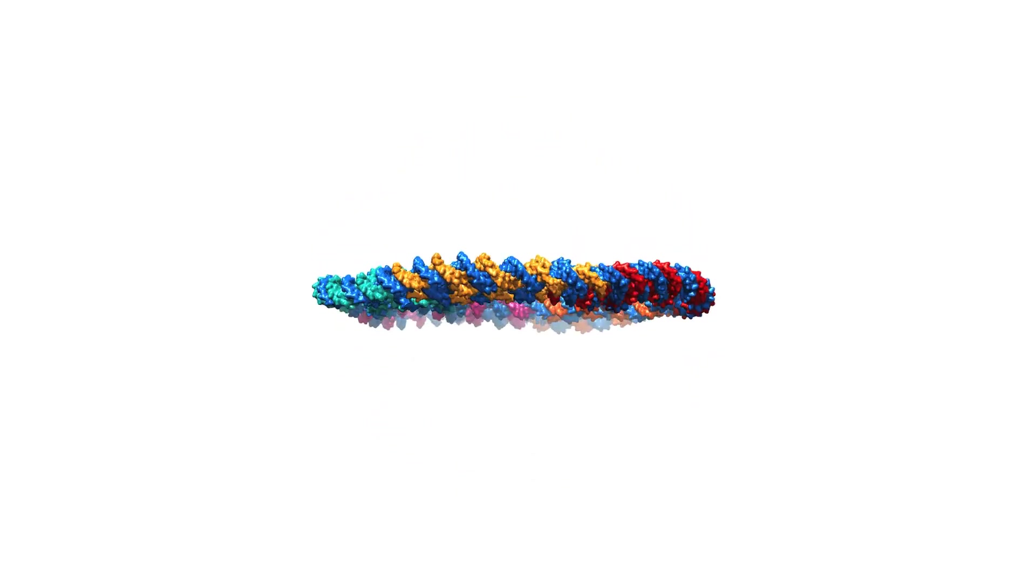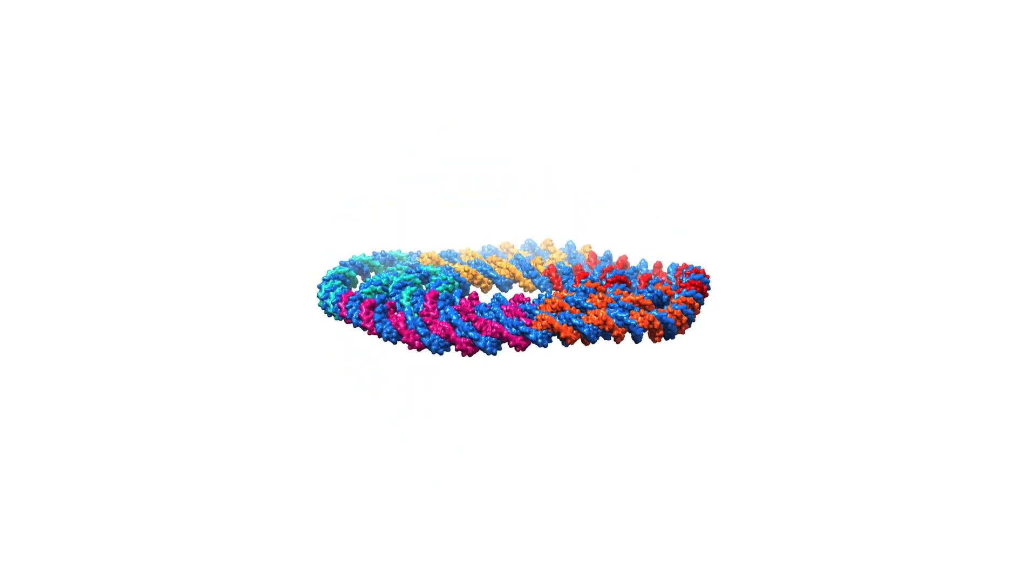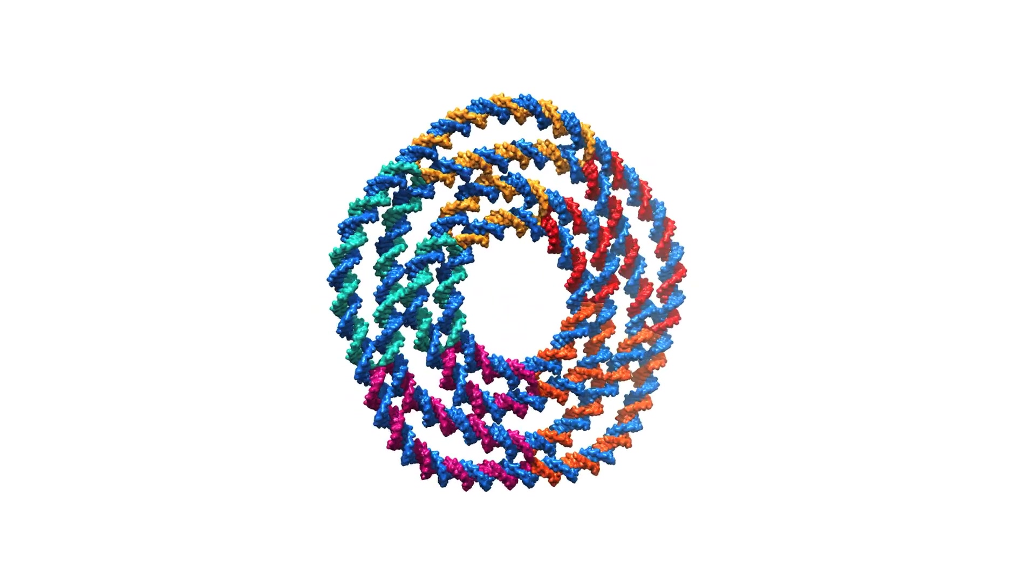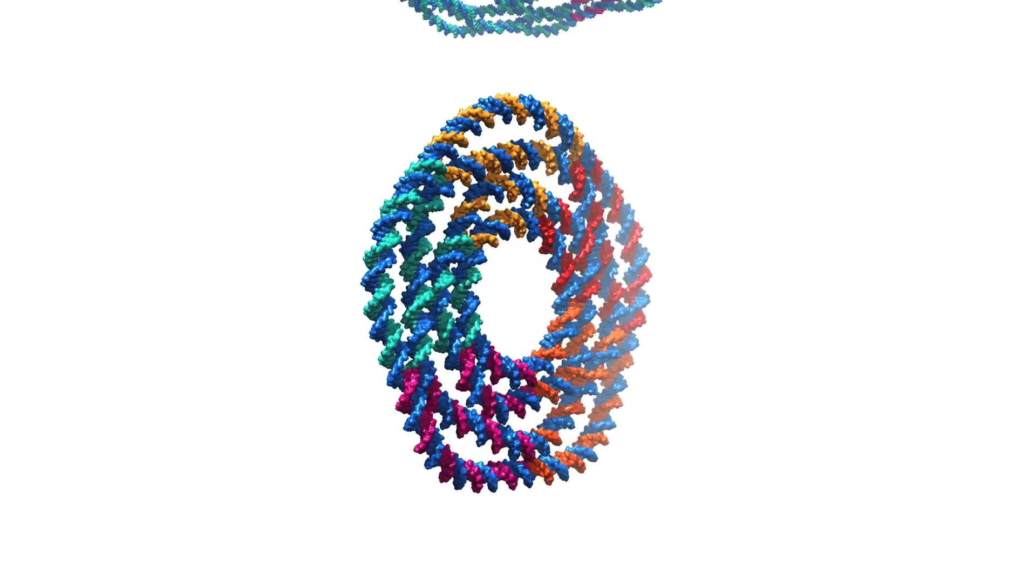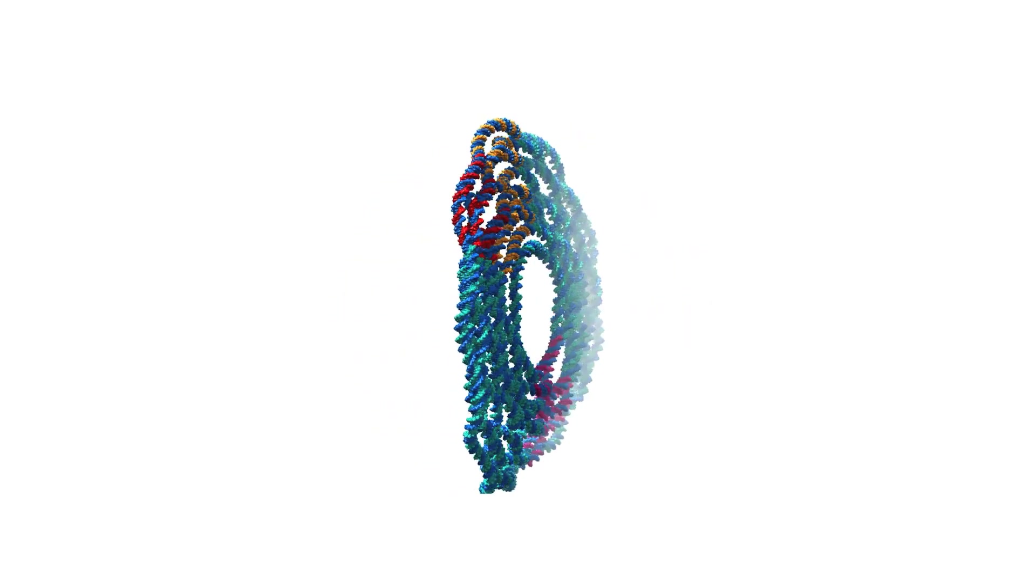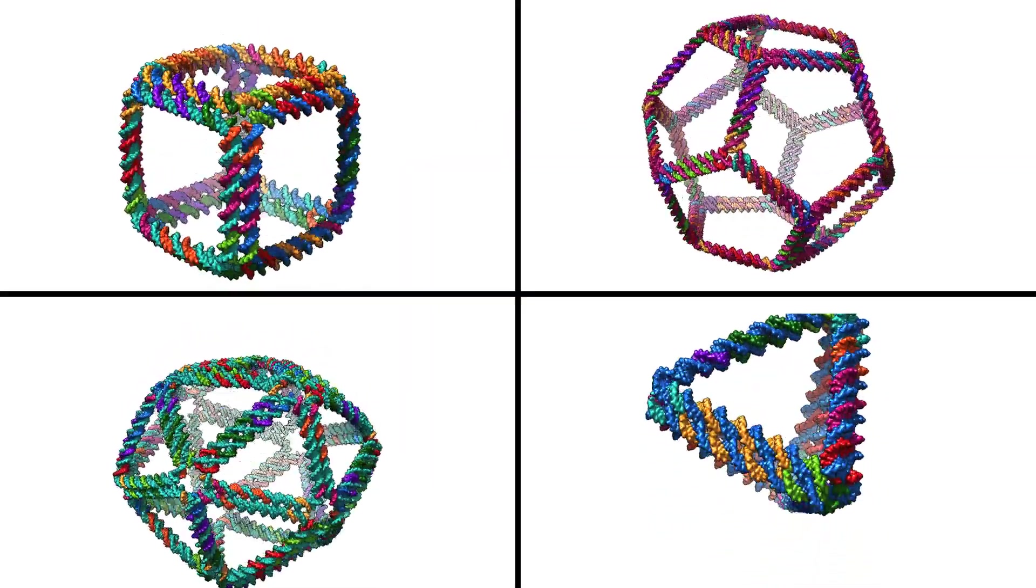After virtually cutting the DNA into smaller sections, the new computer program reassembles them into larger structures such as rings, disks, and other shapes. By changing the sequences of these DNA components, designers can also easily create arbitrarily complex architectures, including symmetric cages such as tetrahedrons, octahedrons, and dodecahedrons.